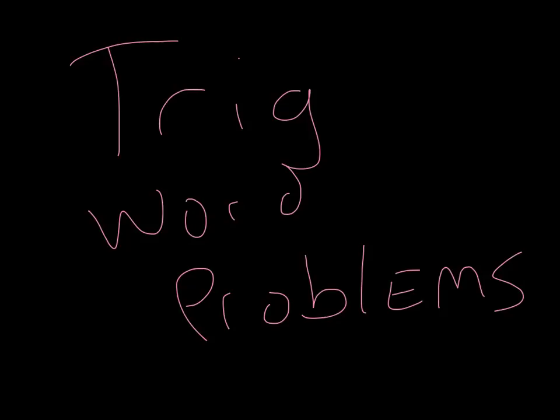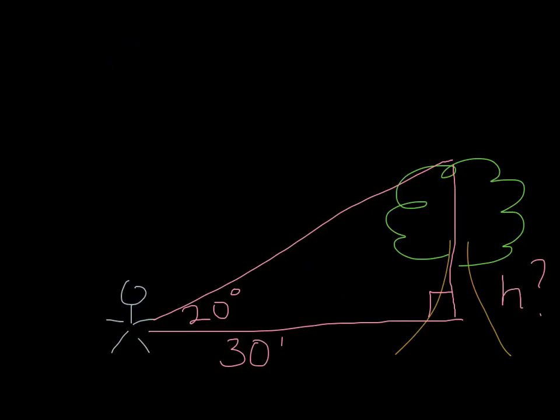Trig word problems are sometimes triangles aren't drawn yet, but we've got to turn that word problem or diagram, if they give us a diagram, into a right triangle problem. Now I've actually drawn a triangle out here for you, but here's how it kind of goes.